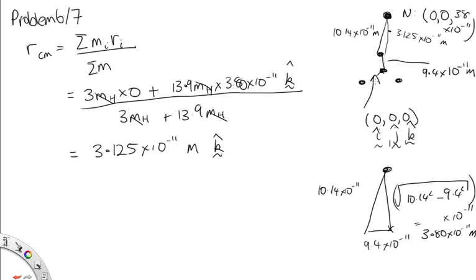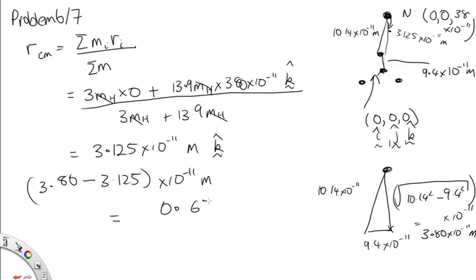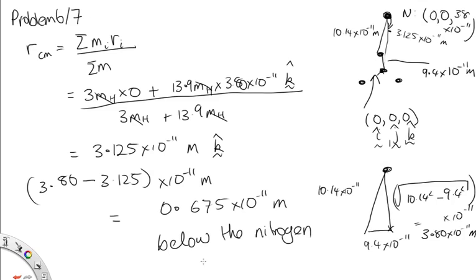That is not exactly what the question asks for. The question asks us to locate the center of mass relative to the nitrogen atom. So we do 3.80 minus 3.125 times 10⁻¹¹ meters, which gives 0.675 × 10⁻¹¹ meters below the nitrogen atom in the direction of the plane of H atoms.